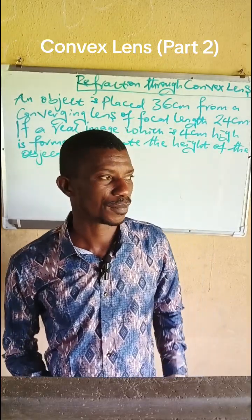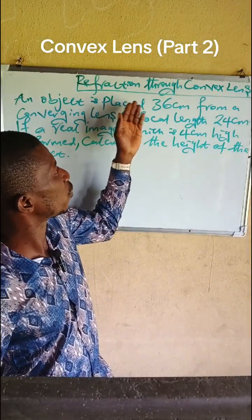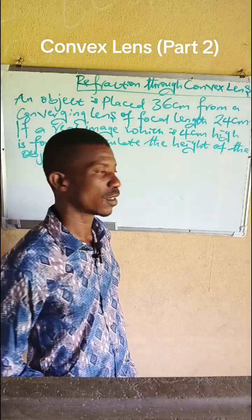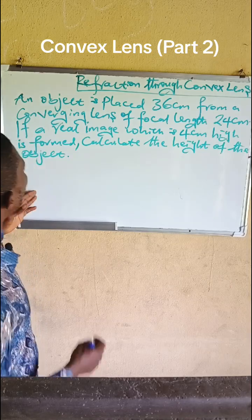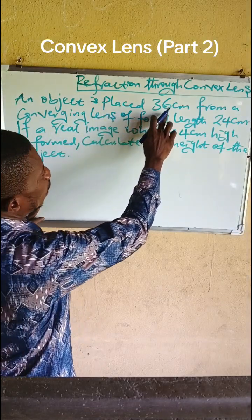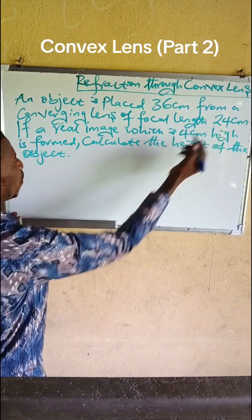Good day everyone. In this class I want to discuss reflection through a convex lens. Now let us see this question: an object is placed at 36cm from a converging lens of focal length 24cm.